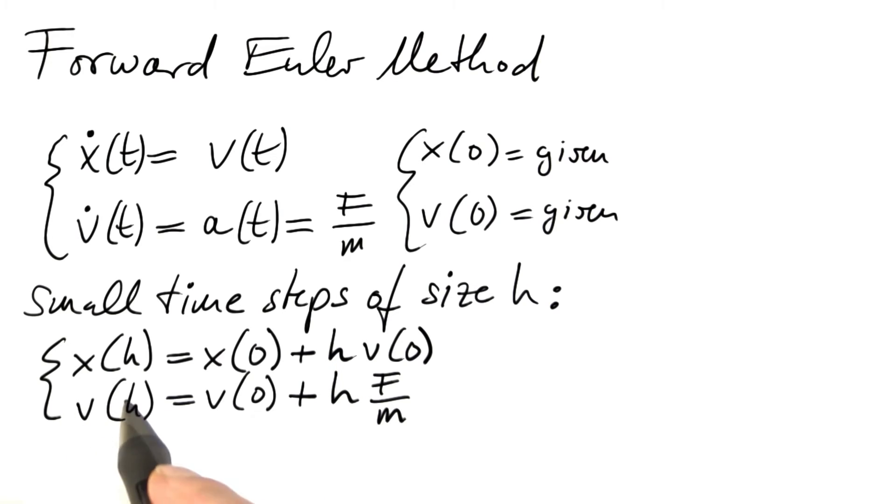Similarly for the velocity, after some small time h, the velocity will be its original value plus the time step times the acceleration, which is f over m. So these equations will take us from time zero to time h approximately.